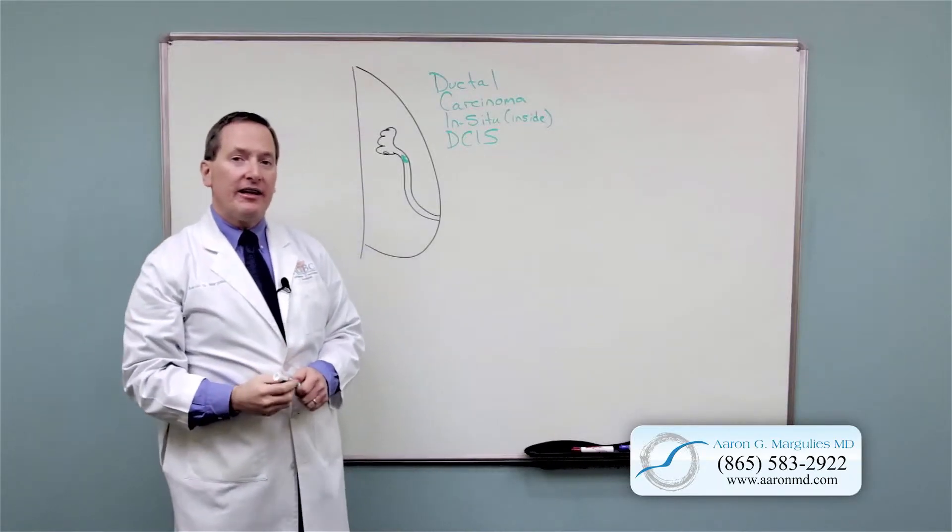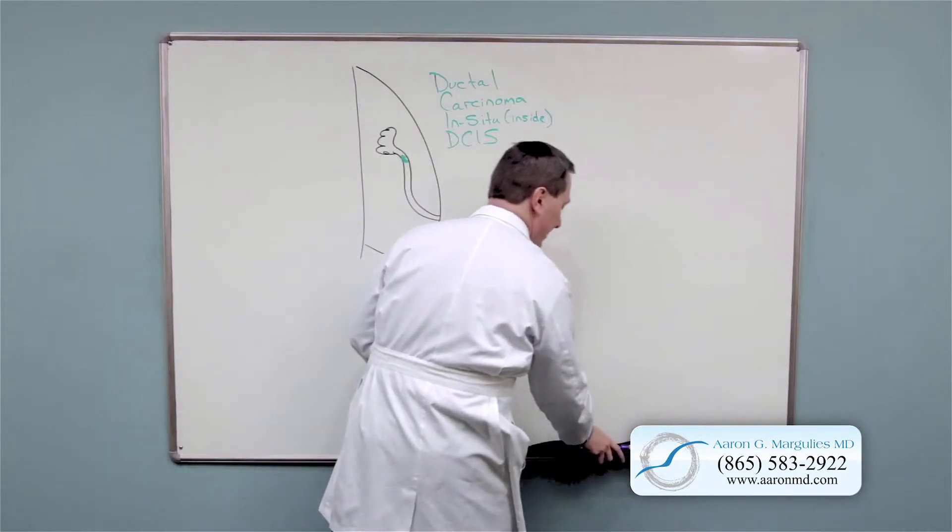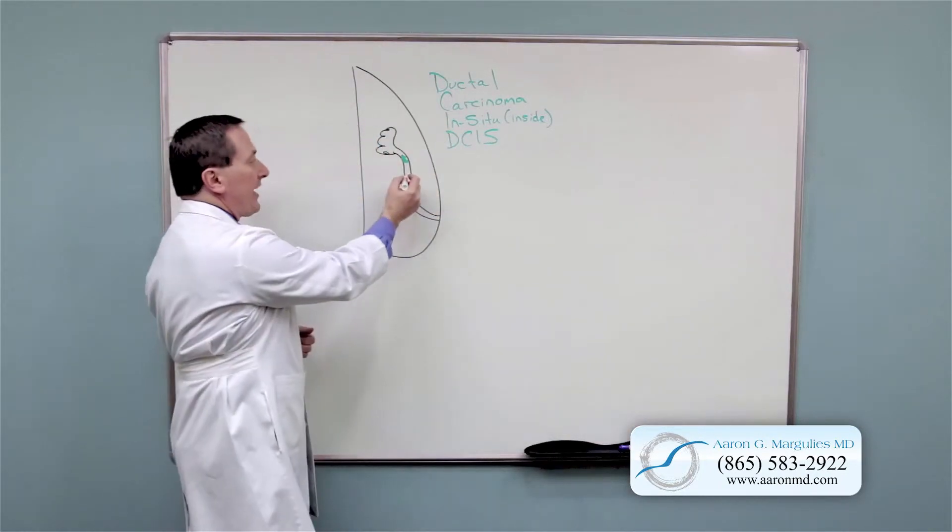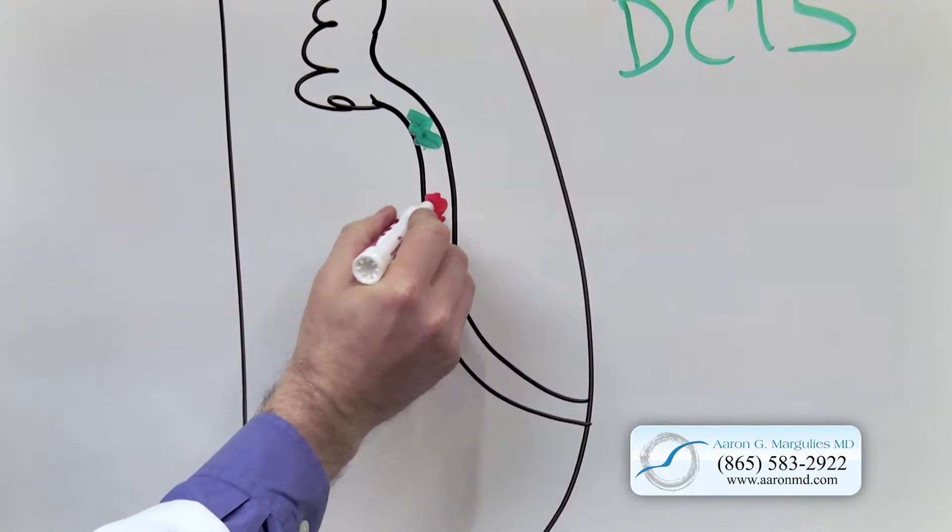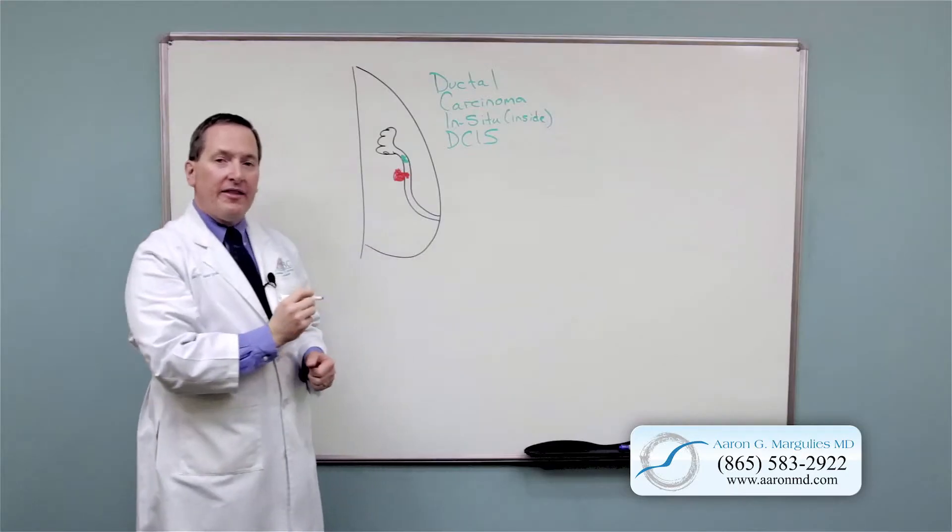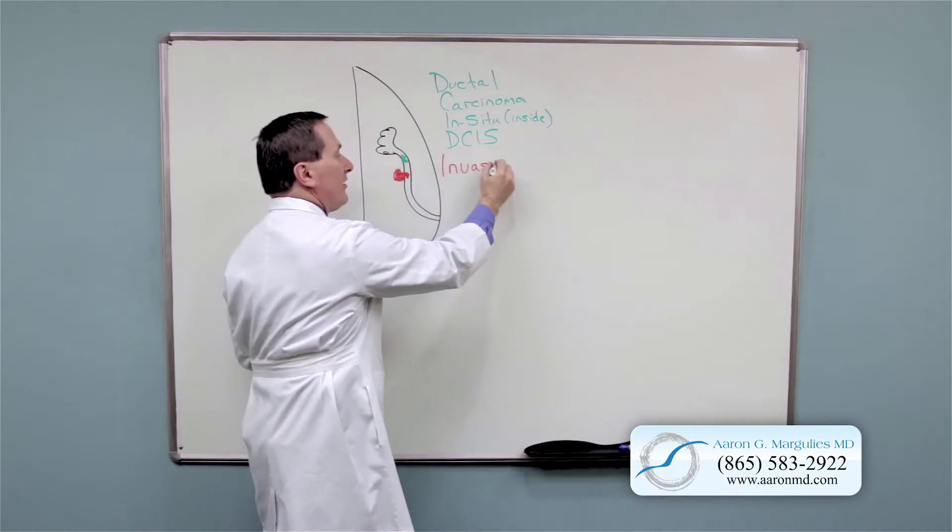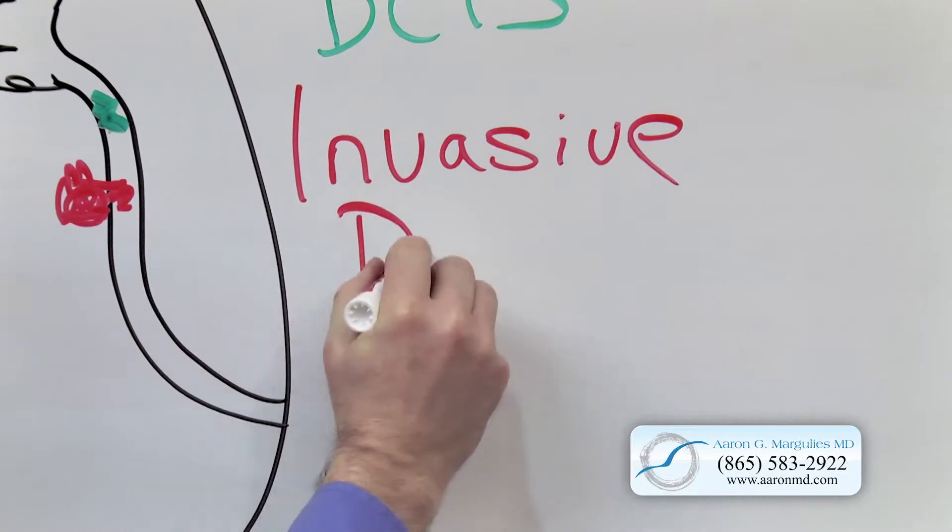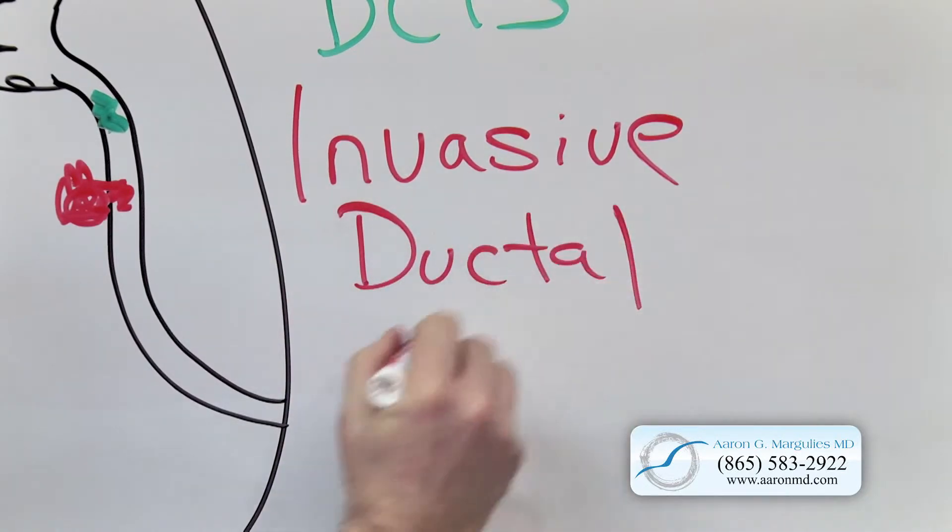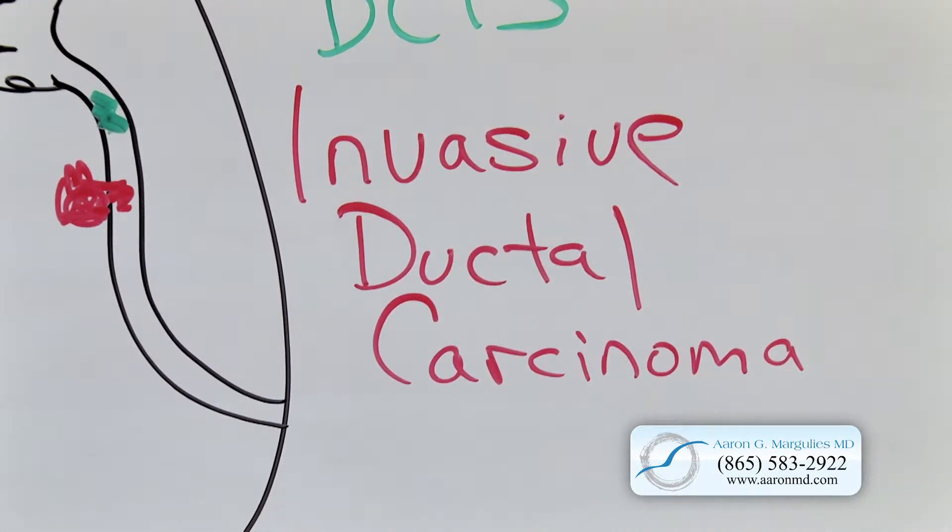But what happens most commonly is that those cells learn how to infiltrate or to invade the breast. They will turn cancerous inside and then escape the duct and invade the breast. And this is what we will call invasive ductal carcinoma. Invasive ductal carcinoma is the most common form of breast cancer.